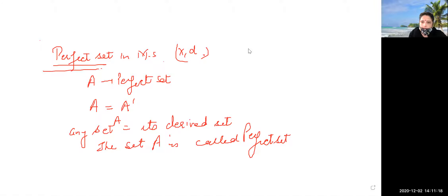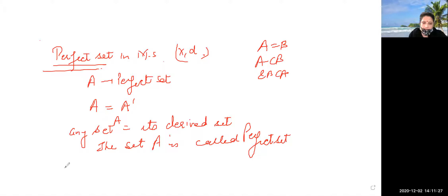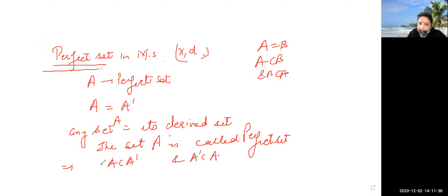Now, A equals A-dash means: A is contained in A-dash, and A-dash is contained in A. The condition A is contained in A-dash means every point of A is a limit point of A.